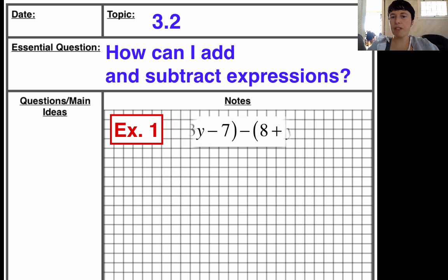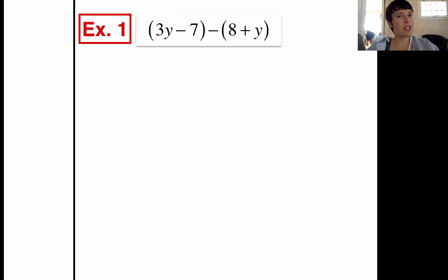Our example for this note is going to be parentheses 3y minus 7, take away parentheses 8 plus y. So we are going to simplify this problem. We are still not solving yet. We can't solve for y until we get an equal sign, but we can clean this up and make it smaller. So I'm going to rewrite the 3y minus 7 because I don't really need the parentheses. Then I'm going to very carefully pay attention to the takeaway symbol. Takeaway means I've got to subtract the 8 and I've got to subtract the y.